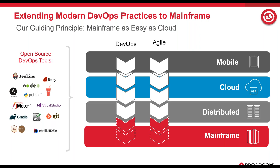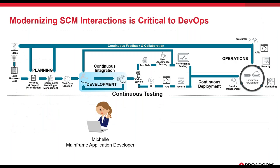New developers want to use the tools they know and love from the distributed space — things like Jenkins and Git. You can see on the left a whole bunch of different toolsets — those are what the next generation of developers want to use in their day-to-day activity. So modernizing mainframe and fitting it into the world of DevOps and modern tools is a very hot topic.